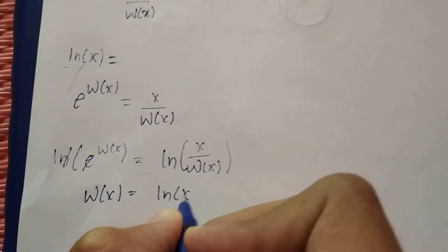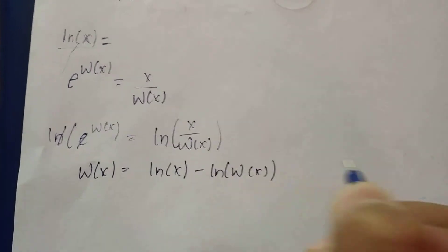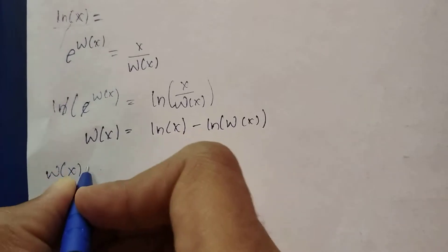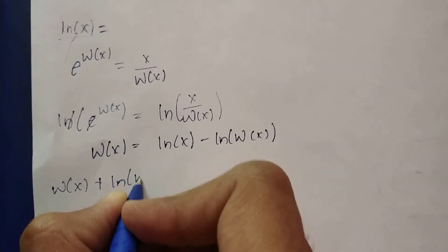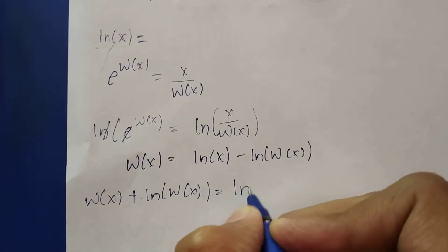Now I'll put it on this side, so W(X) plus ln(W(X)) equals ln(X). Now here still there is natural logarithm, but now I will replace this to be Y.